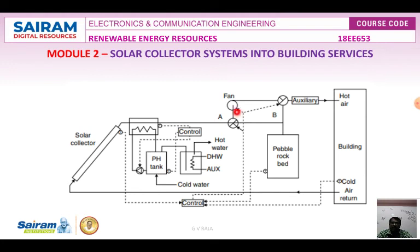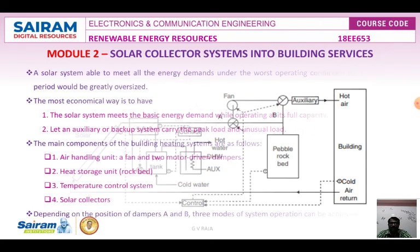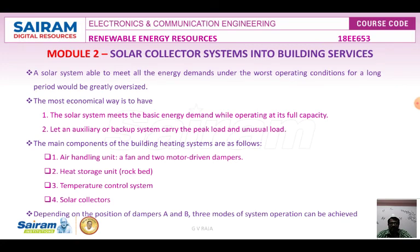In the second mode — damper A is open, damper B is closed — solar heat is collected but no space heating is required at that time. The fan blows the solar-heated air through the rock bed for thermal storage.